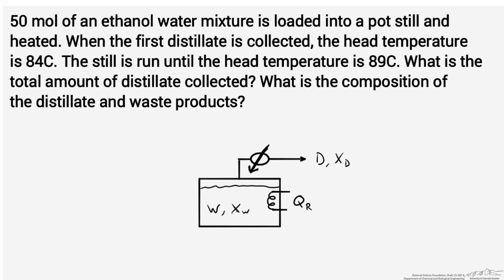In our still, we have 50 moles of an ethanol-water mixture. At the beginning of the distillation process, the head temperature — or the vapor temperature — is recorded and determined to be 84 degrees C. The still is going to be run until the head temperature is 89°C, and what we're trying to determine are both the total amount of distillate collected and also the composition of distillate and waste products.